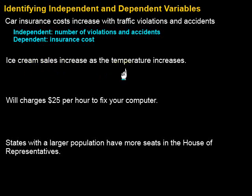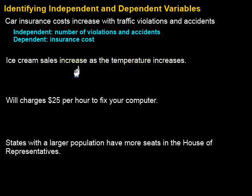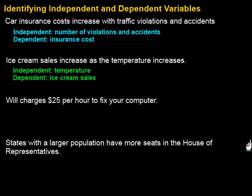So what controls what — what's in charge here? Do the ice cream sales control what the temperature is outside, or does the temperature outside control the ice cream sales? It seems that when it's warmer — and this is kind of what it says — the sales increase when it's warmer. So being warmer is going to be in control, and that is our independent variable. That means the sales must be the dependent variable.